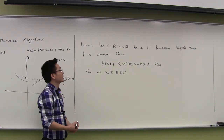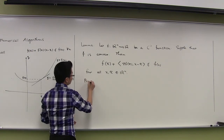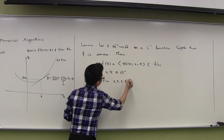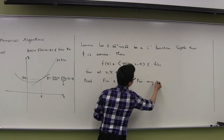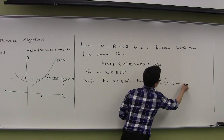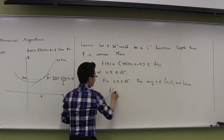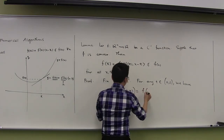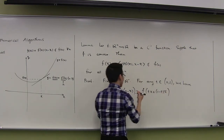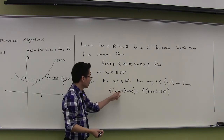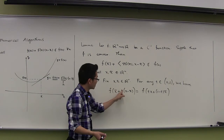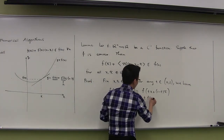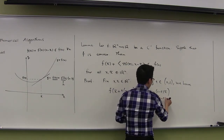Let me give the detailed proof of this lemma. We fix any x and x-bar in Rn. For any t in the interval [0,1] we have: f(x-bar + t(x minus x-bar)) = f(tx + (1-t)x-bar). By the convexity of the function f, this is less than or equal to t times f(x) plus (1-t) times f(x-bar). Rearranging, we get f(x-bar) + t times (f(x) minus f(x-bar)), and this is true for all t in [0,1].